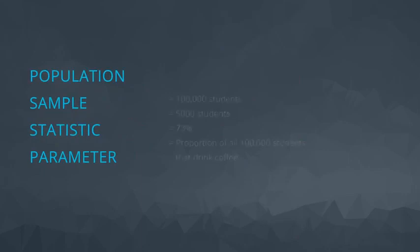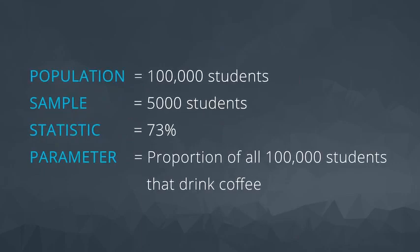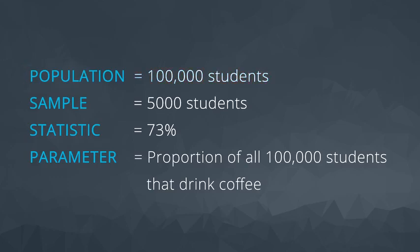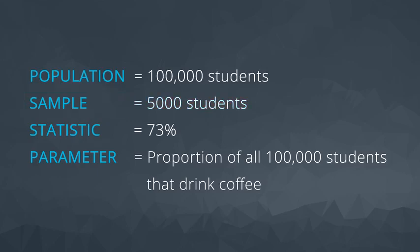The general language associated with this scenario is as shown here. We have a population, which is our entire group of interest — in our case, the 100,000 students. We collect a subset from this population which we call a sample — in our case, the 5,000 students. Any numeric summary calculated from the sample is called a statistic — in our case, the 73% of the 5,000 that drink coffee. This 73% is the statistic.